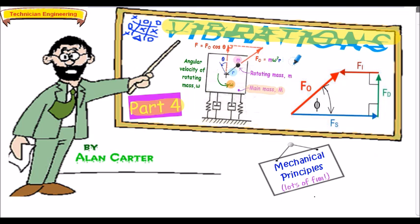For reference, we considered the concept of centrifugal force in a previous presentation. In this part 4 presentation, we're going to consider the analysis where we have to calculate the eccentricity or radius r of the rotating mass lowercase m, given various parameters, as well as consider further questions similar to that in part 3 of the lecture series, but slightly more complicated in the way the information is presented in the question.